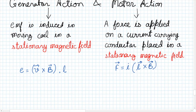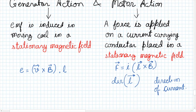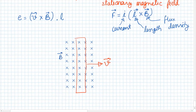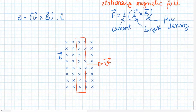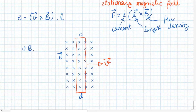The direction of vector L should be the direction of current. Now let us take an example. We have a magnetic field with flux density B directed into the screen, and a conductor CD which has a velocity V in this direction. The EMF induced in conductor CD will be V times B times L, where L is the length of the conductor.